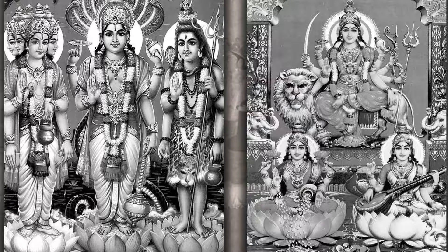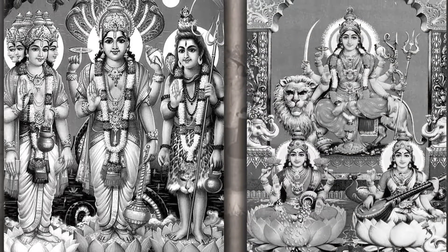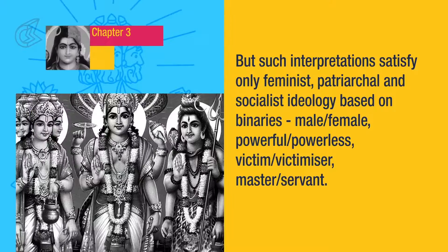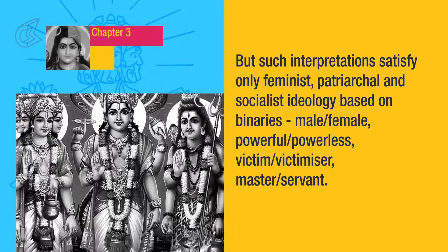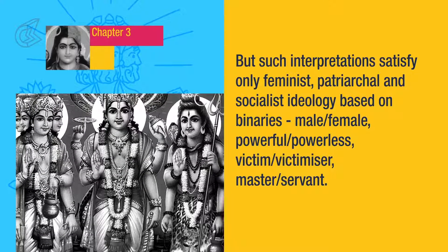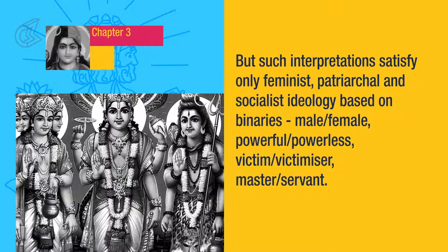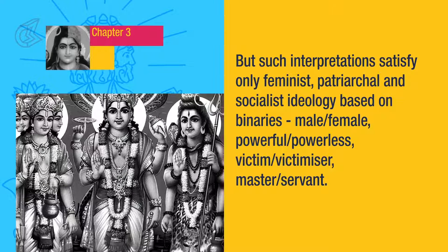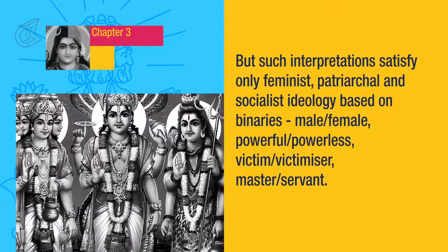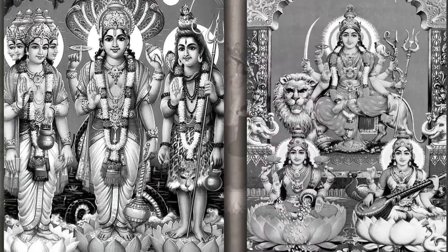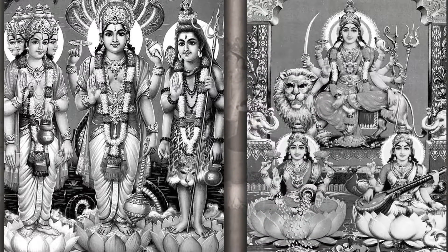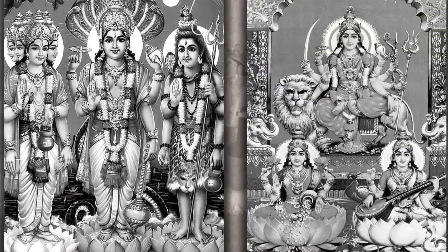Such a reading tells us that men are active subjects — the ones who do things — while women are passive objects, the ones to whom things are done. But such interpretations satisfy only feminist, patriarchal, and socialist ideology, based on binaries like male-female, powerful-powerless, victim-victimizer, master-servant. There is an alternate way of seeing these images: to focus on the idea behind the form.